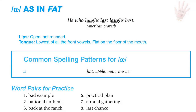A as in fat. The lips are open, not rounded, and the tongue is in the lowest position of all the front vowels — flat on the floor of the mouth. The common spelling pattern for this sound is the letter A, as in hat, apple, man, and answer.